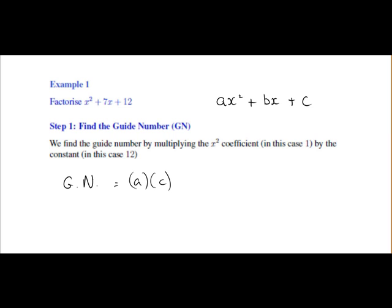So a is the number beside the x squared. If it's x squared on its own that means it's 1x squared, so a equals 1. c is the constant and that's 12 in this case. So 1 by 12 equals 12. Our guide number here is 12.